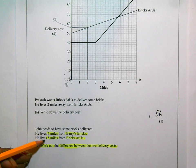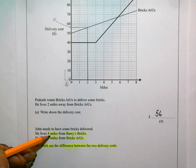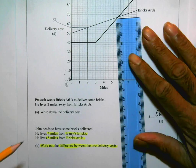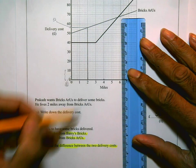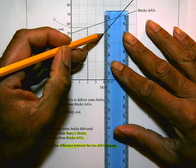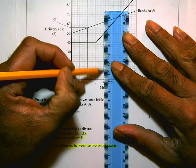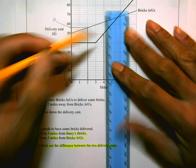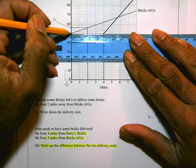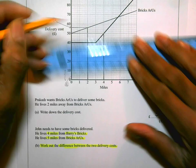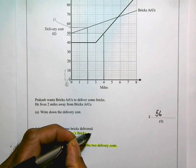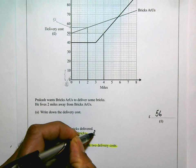So he lives four miles from Barry's Bricks. That's four miles from Barry's Bricks. Barry's Bricks is the dark line. And I'm going to draw a line up to there and then across. And that's going to cost him 50 pounds. It's bang on 50. So that's going to cost him 50 pounds. I'm going to write that here. Just save me some space. That's going to cost 50 pounds.